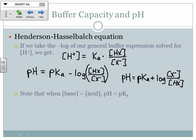That's the Henderson-Hasselbalch equation. When the base concentration equals the acid concentration, the log of X⁻ over HX equals log(1) which is 0, so pH equals pKa — confirming what we said before. You can only use this equation when you have significant amounts of both the acid and the conjugate base.